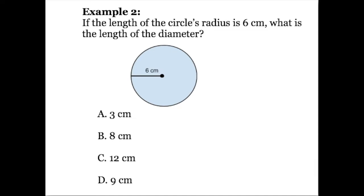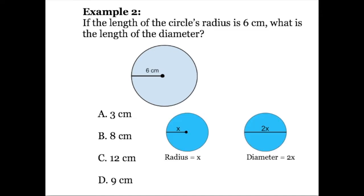Here's another example problem. The problem reads: if the length of the circle's radius is 6 centimeters, what is the length of the diameter? Go ahead and pause the video to try this one out. We're asked to find the length of the diameter given the radius, so we can go to the formulas we looked at earlier.